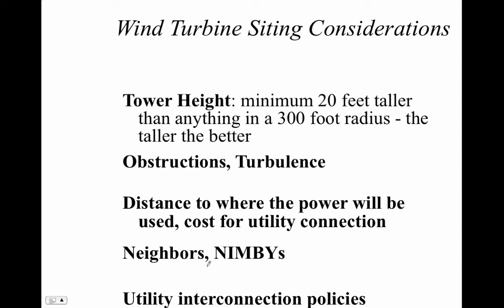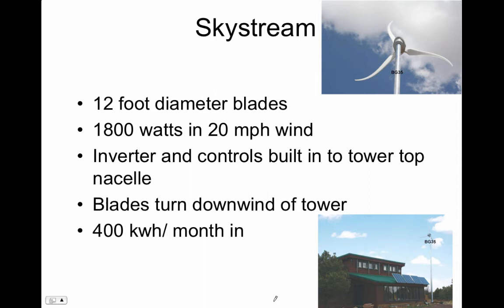When doing site analysis, you need to look at obstructions and turbulence, the distance to where the power will be used, and the cost for utility connection. You have to think about neighbors and the NIMBYs — they love the idea but just don't want it near them. And you have to look at the utility interconnection policies — the rules and regulations that allow you to connect this turbine to the utility. These will essentially be the same for wind and solar.